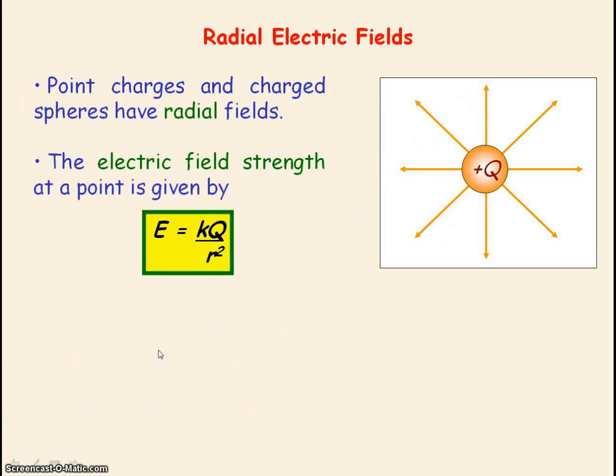The electric field strength at a point is given by this equation: E = kQ divided by r squared.